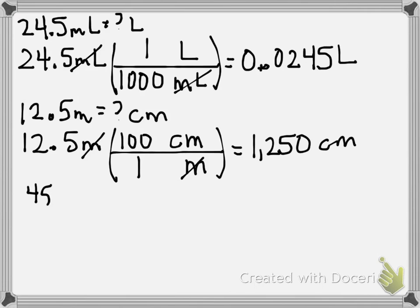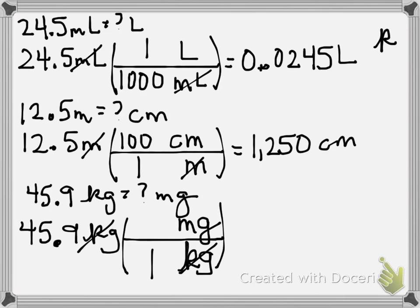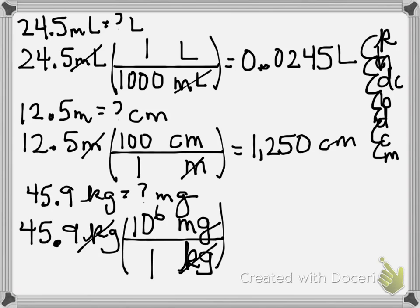Letter C: 45.9 kilograms — how many milligrams is that? I start with 45.9 kilograms. Kilograms go on the bottom. Milligrams go on the top. A kilogram is larger. Counting down — King Henry Died By Drinking Chocolate Milk: 1, 2, 3, 4, 5, 6 — 10 to the 6th. Which means we get 45,900,000 milligrams.